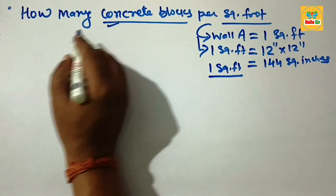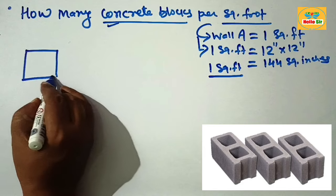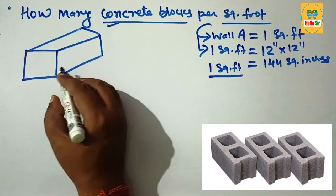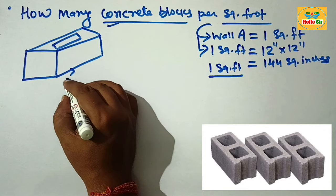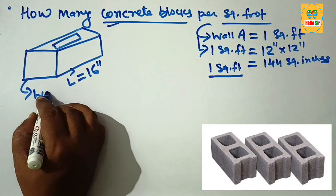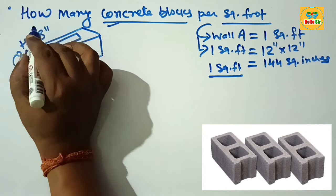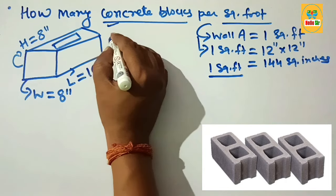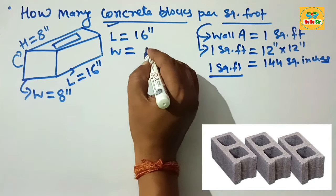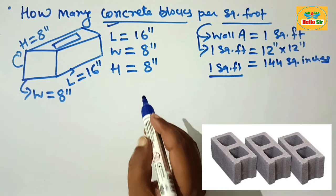Now let's understand the dimensions of a concrete block. First, make a rough diagram to understand the different dimensions. The length is about 16 inches, the width is about 8 inches, and the height is about 8 inches. The standard dimensions for a concrete block are: length 16 inches, width 8 inches, and height 8 inches.